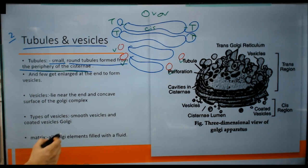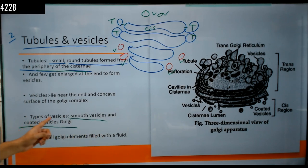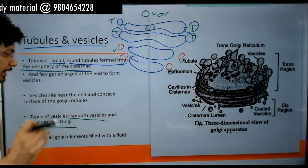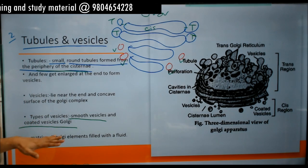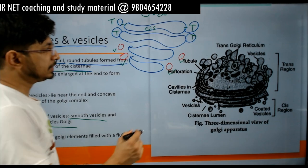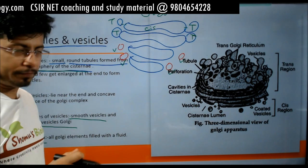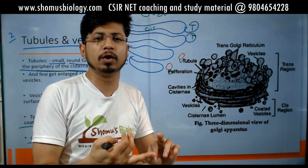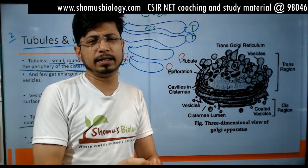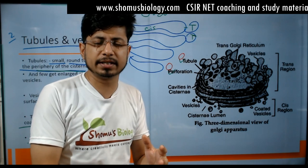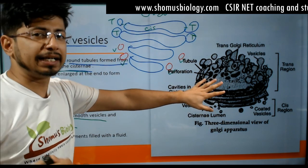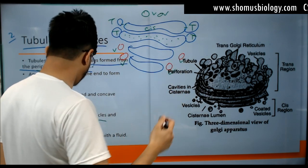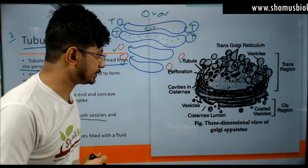There are smooth vesicles and coated vesicles of Golgi. Apart from that, another structure is the matrix — the fluid-filled center of the Golgi apparatus where all protein modifications, sorting, and chemical tagging such as phosphorylation, sumoylation, acetylation, and modification of carbohydrates are carried out. This center is also known as the lumen of cisternae, which is the matrix of Golgi apparatus.